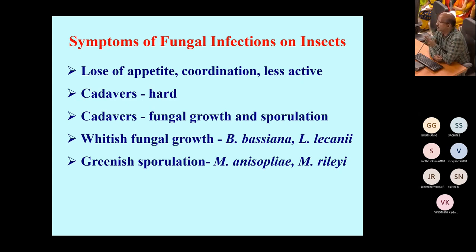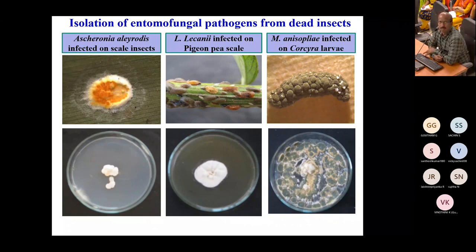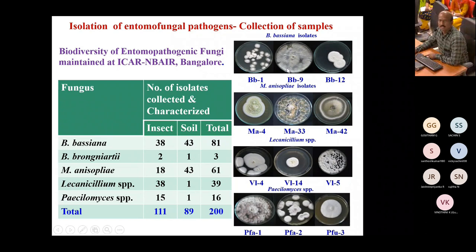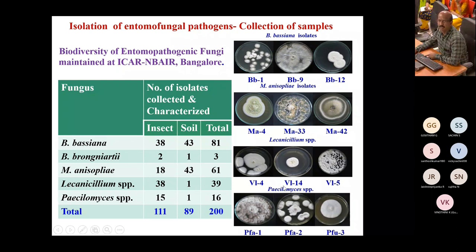Recently, we have also found some novel fungi. Images show Aschersonia aleyrodis infecting scale insects, Lecanicillium lecanii on PGNP scale, and Metarhizium anisopliae on chafer grubs. A hard cadaver with greenish Metarhizium growth is visible. Through wind, these act as inoculum for infecting other insects. This is the culture collection from our institute, ICR-NBAR, with nearly 200 species isolated from different soil and insect samples.